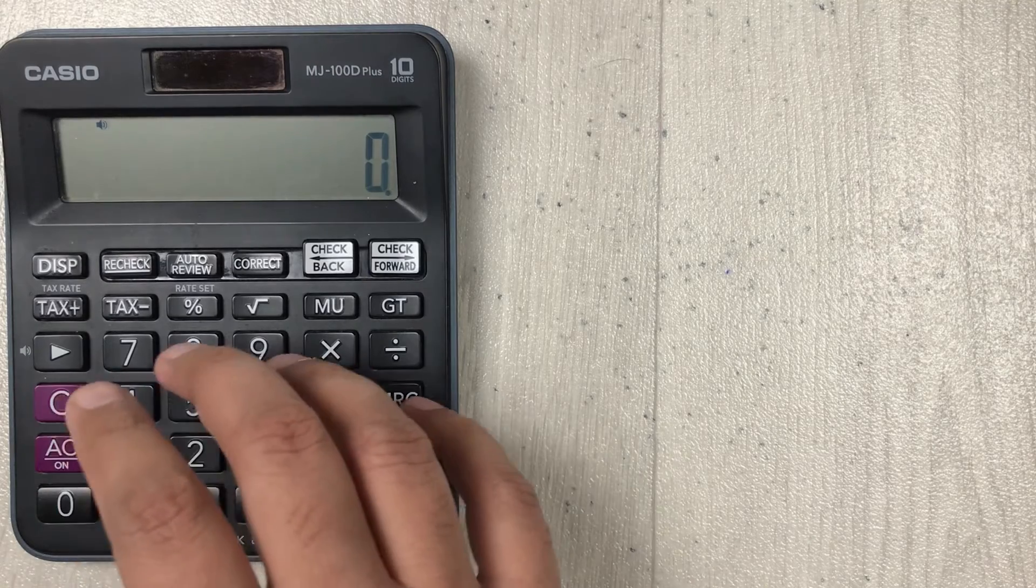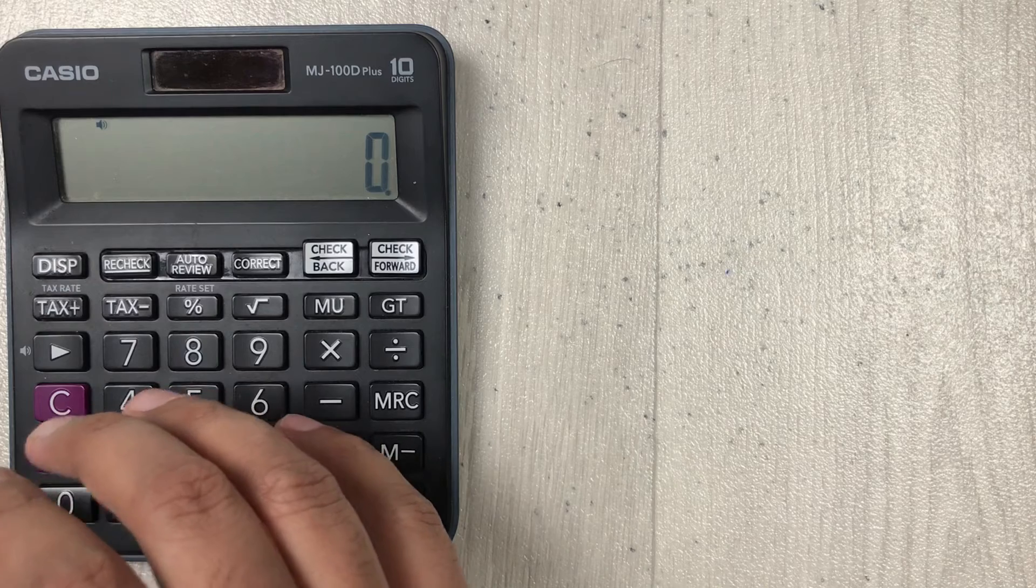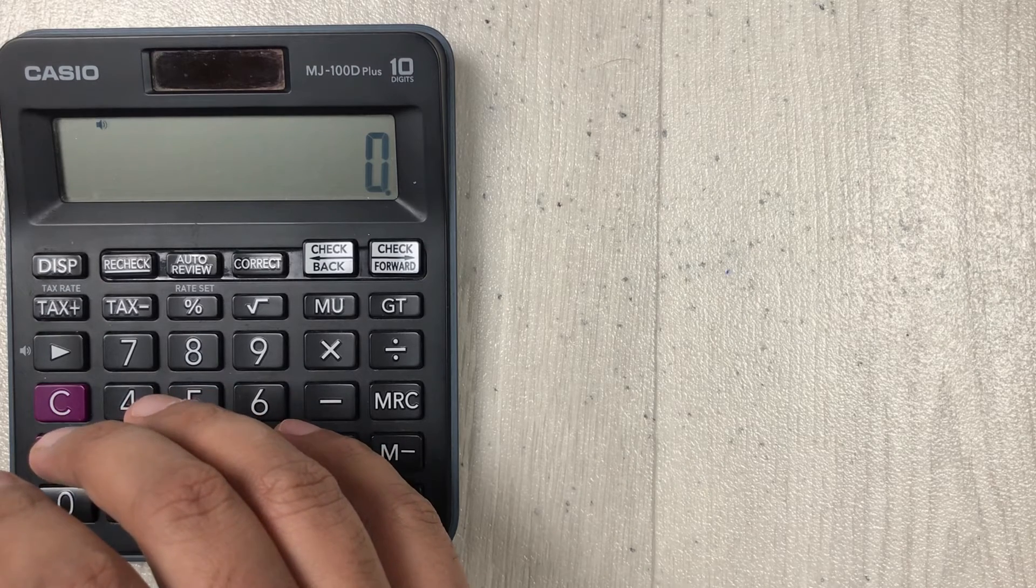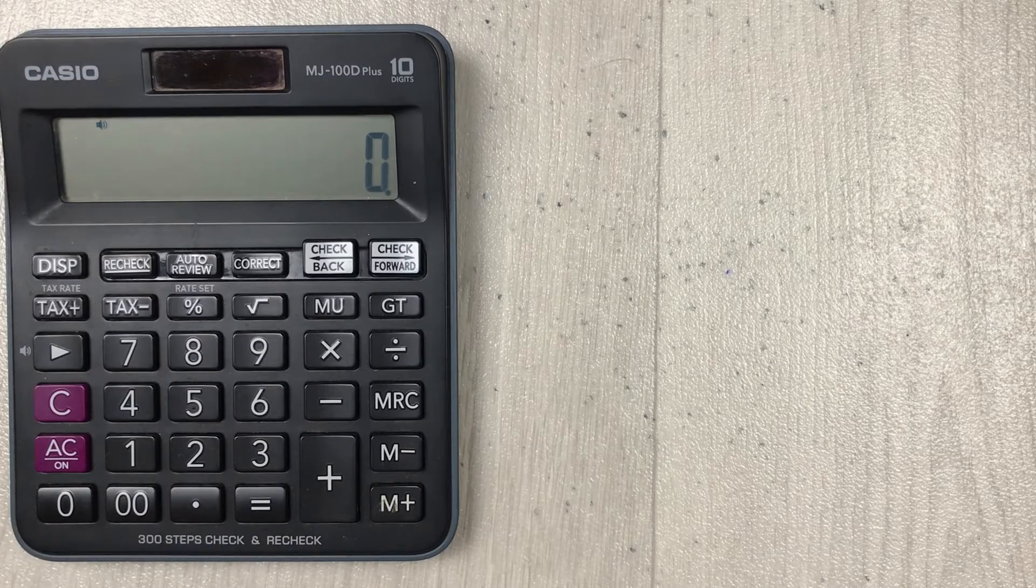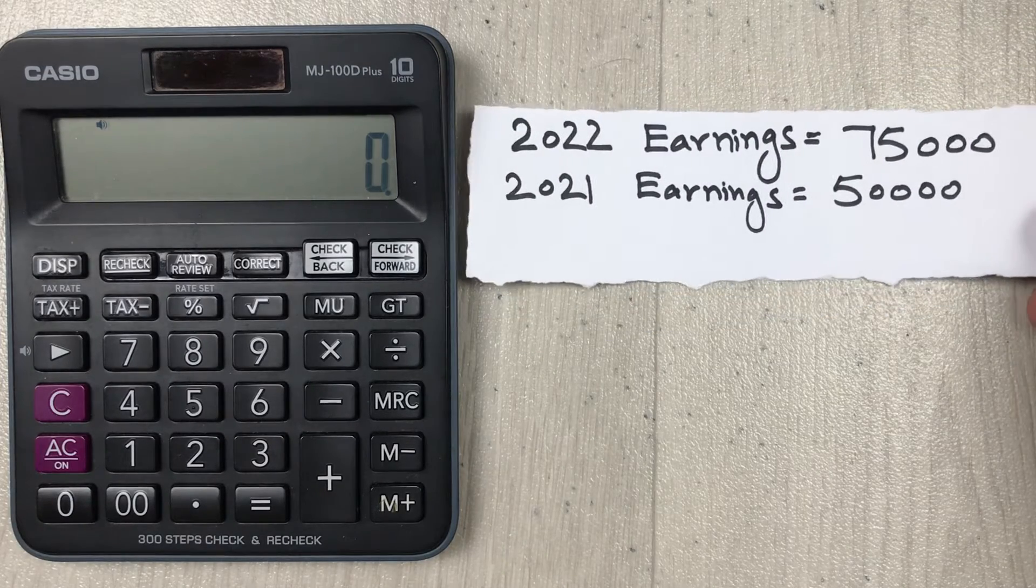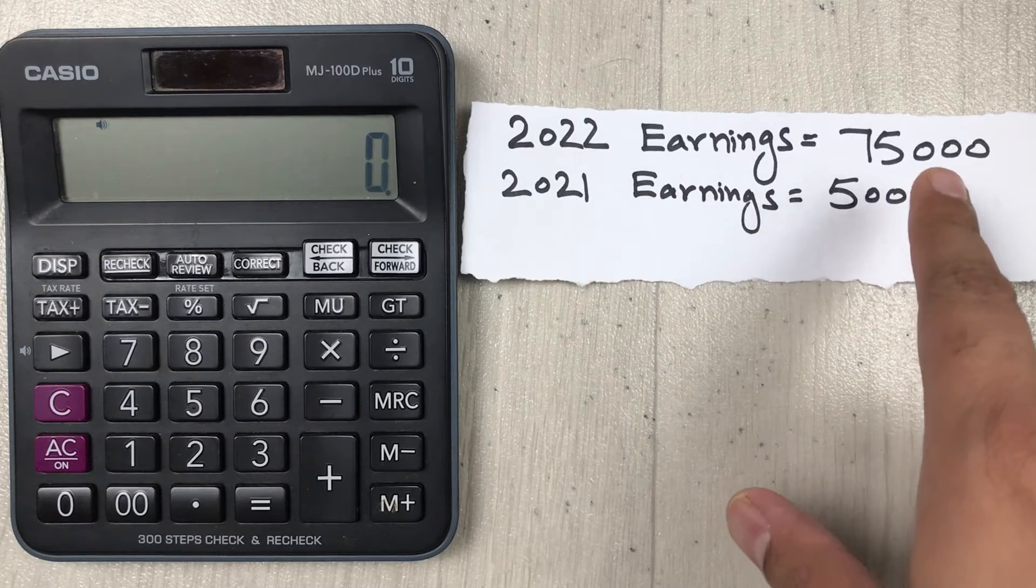Hello guys, I hope you are doing really well. In today's video, I'm going to show you how to calculate year over year growth percentage on your simple calculator. Let's say our 2022 earnings are 75,000 and 2021 earnings are 50,000.